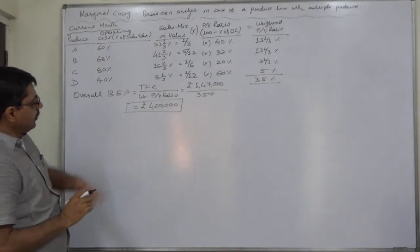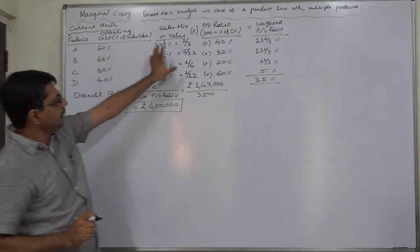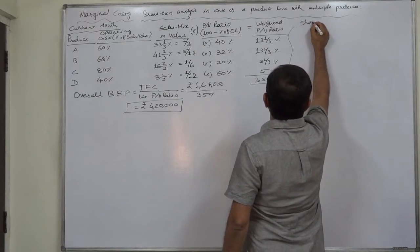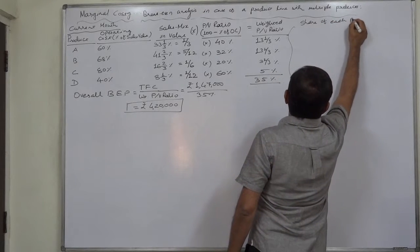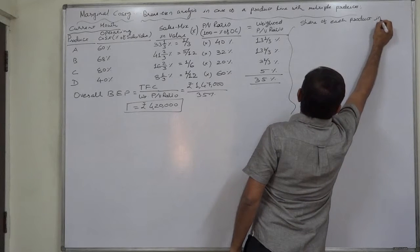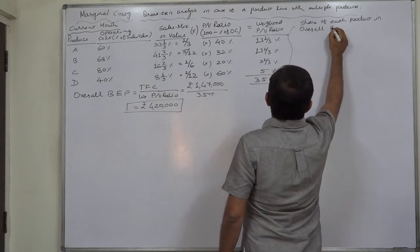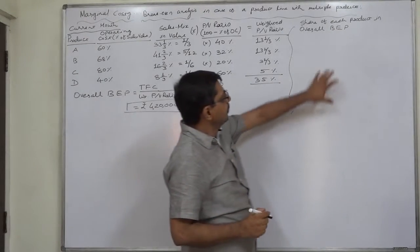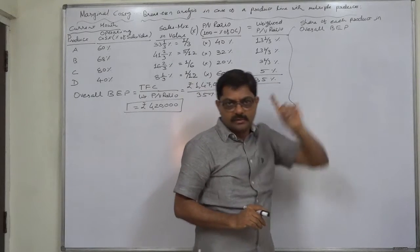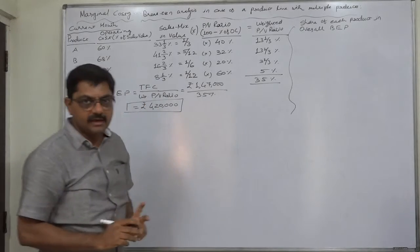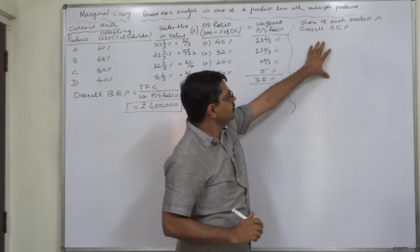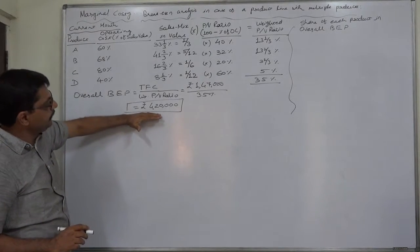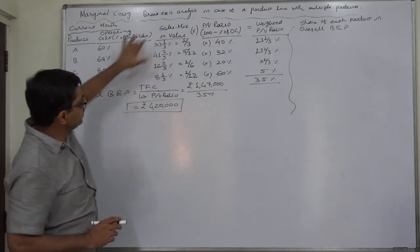If we multiply overall BEP 4,20,000 by this proportion, that will be share of each product in overall BEP. Many examiners and paper setters use the term product-wise BEP for this amount. I cannot agree with that term because this is merely share of each product in overall BEP. This is the BEP of the firm as a whole if the firm makes sales value in this proportion.